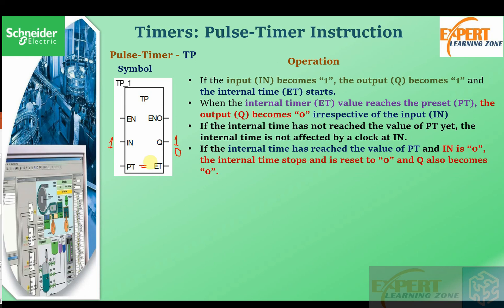Even if the input state has changed to zero or one within that duration, the output will still go to zero. That is why, if the timer has not reached the preset value yet, the internal timer is not affected by any event on the input parameter. Lastly, if the internal time has reached the preset value and the input IN is zero, the internal timer stops and resets to zero and Q becomes zero. It checks the state of the input only after the preset time equals the internal time — if it is one, it will begin again; if it is zero, it will reset.